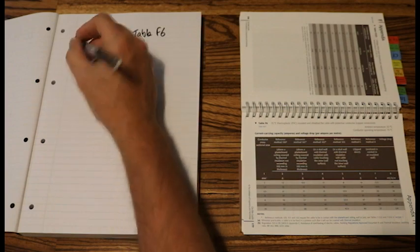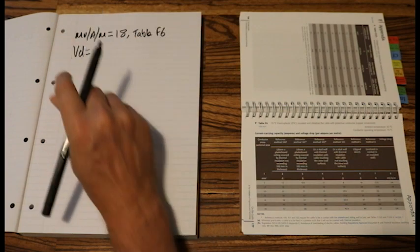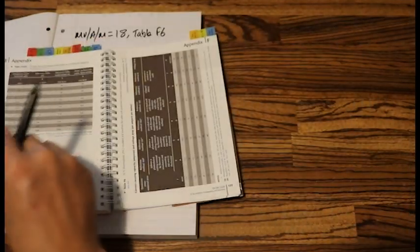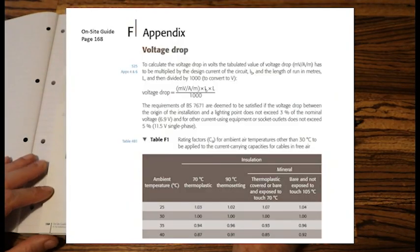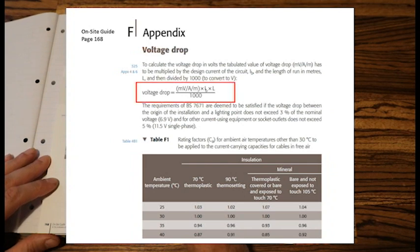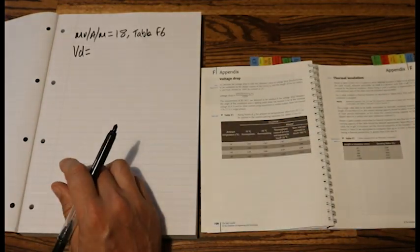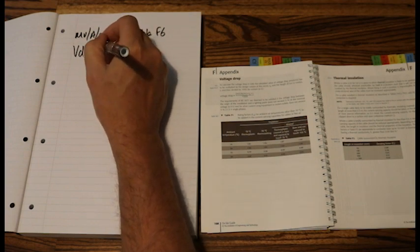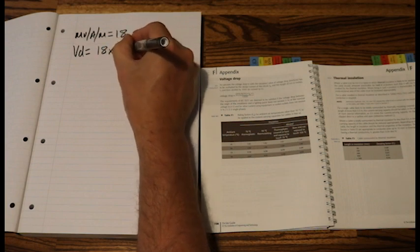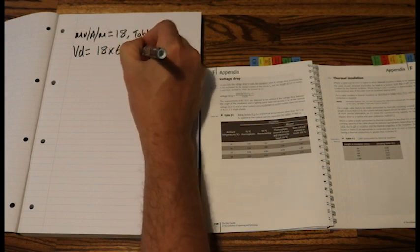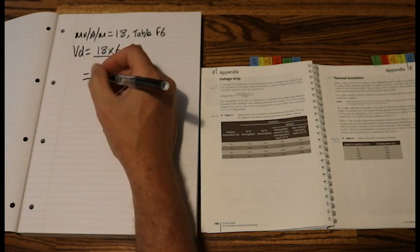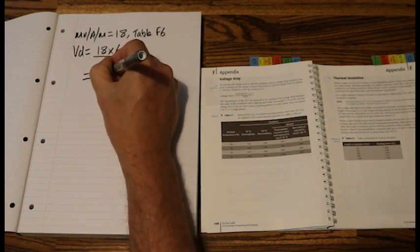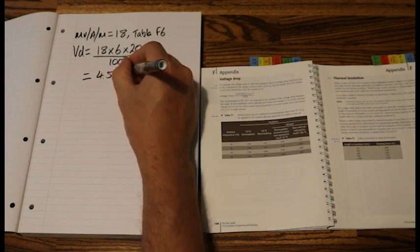And now we're going to do a volt drop formula. Volt drop. So here we go. Back a few pages. In the on-site guide, have a look at page 168. We've got our volt drop formula written down. MVAM times IB times L over 1,000. So let's input the values that we have. So, 18 times IB which is 6 times L. Our length was 20m. Over 1,000.